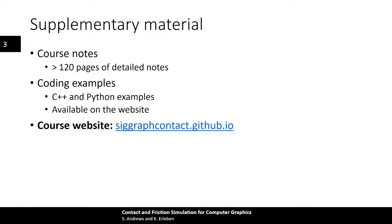In addition to this presentation, you will find many more details in the course notes, which comprise more than 120 pages of mathematical details, pragmatic advice, and references about frictional contact simulation. C++ and Python code examples for many of the models and methods we present can be found on the course website at siggraphcontact.github.io. We intend to regularly revise and update the course notes and programming examples, and the latest version can always be found on the website.